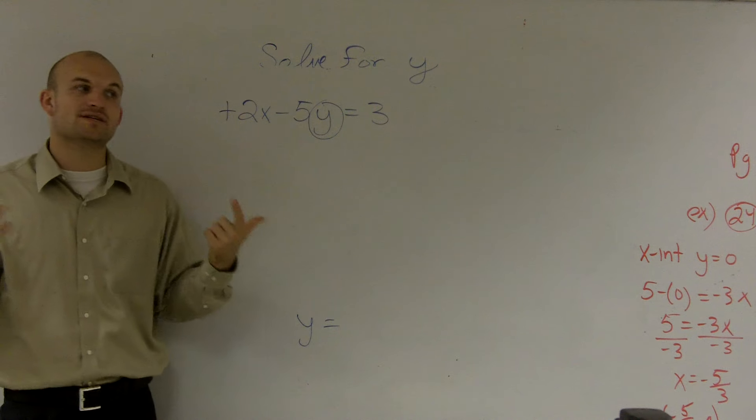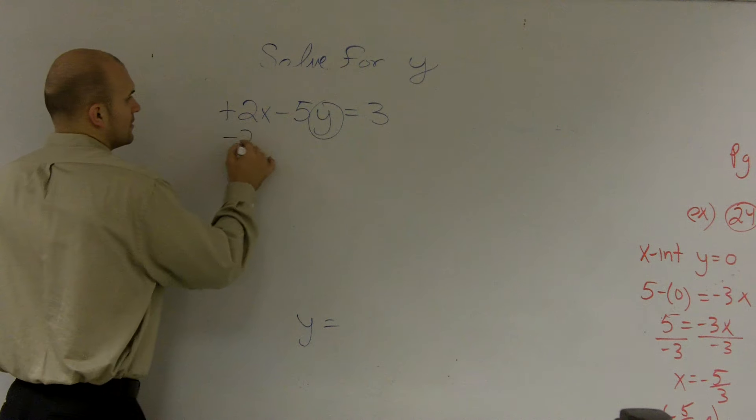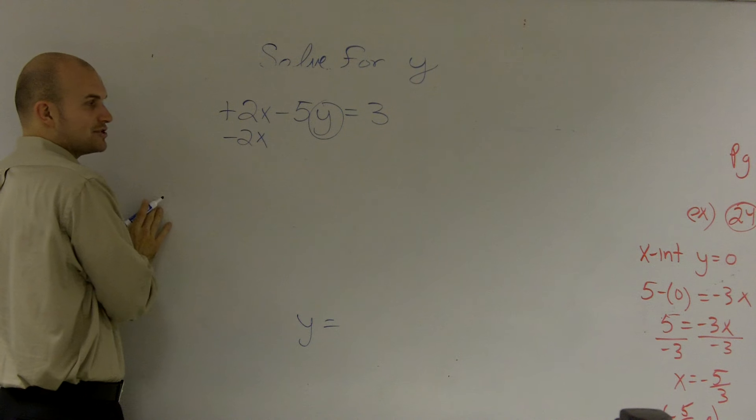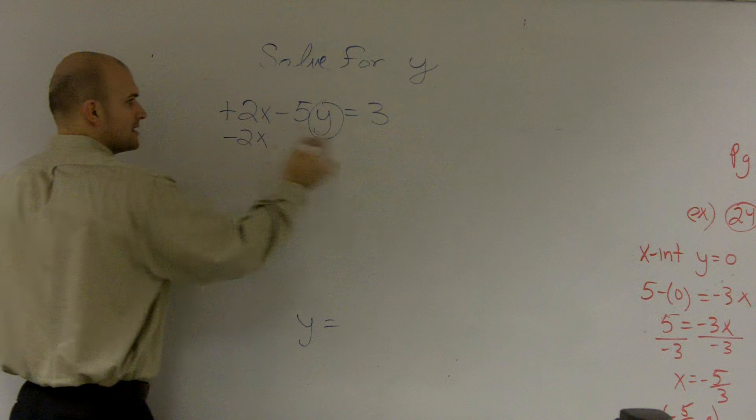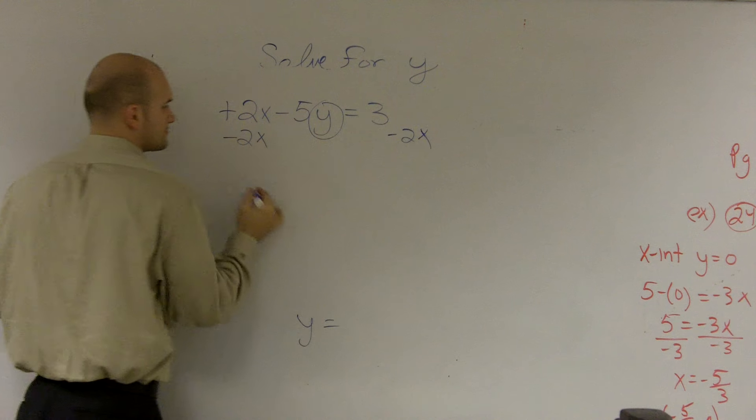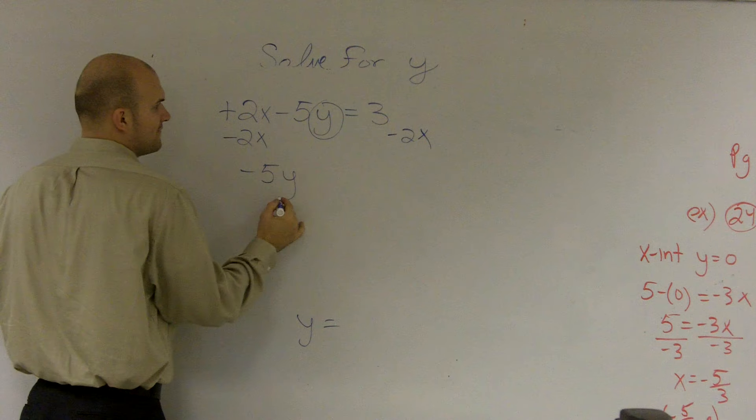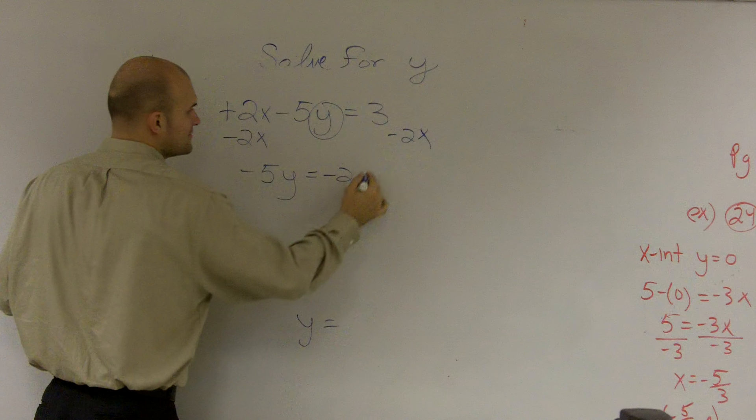So the first thing we always do is undo addition and subtraction. So what is being added or subtracted to my variable? Well, I'm adding a 2x, right, Kara? So I'm going to subtract the 2x. Therefore, I'm left with negative 5y equals a negative 2x plus 3.